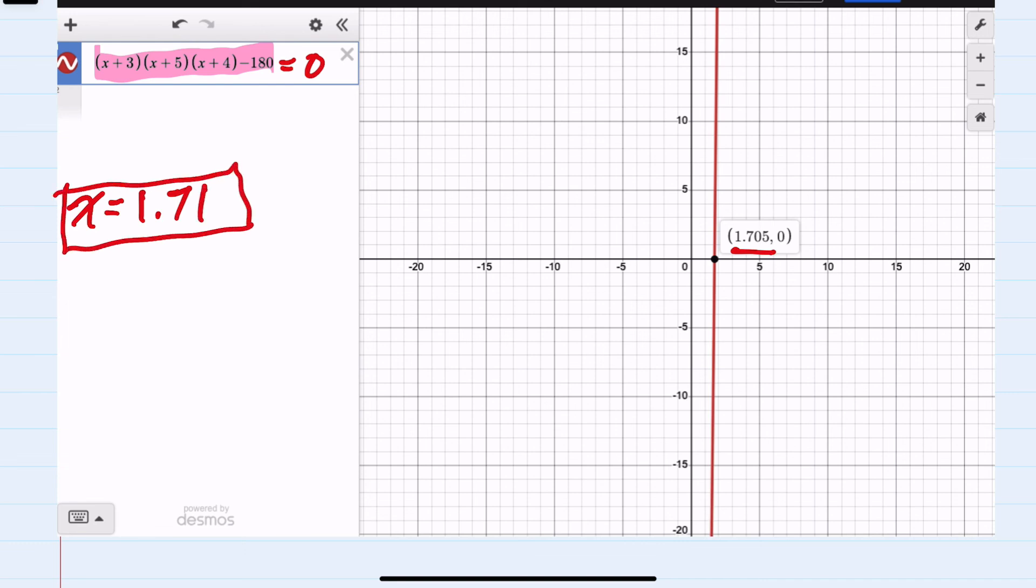This is our answer because when plugging in X = 1.71 into this function, the result is 0. I should recall that these are feet in this example.